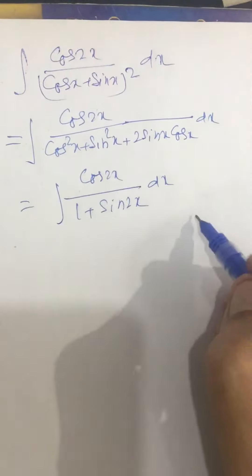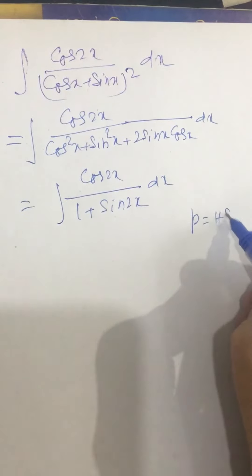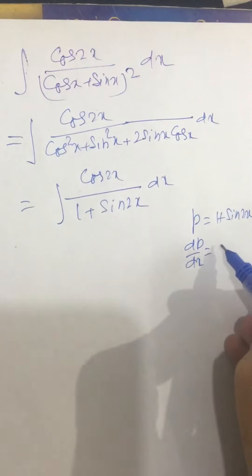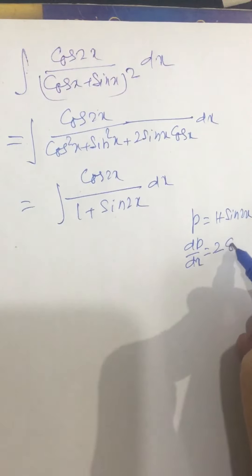If we put p equal to 1 plus sin2x, then this becomes dp upon dx equal to 2cos2x.